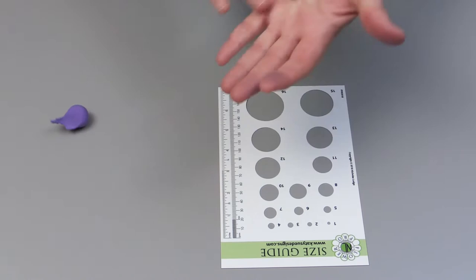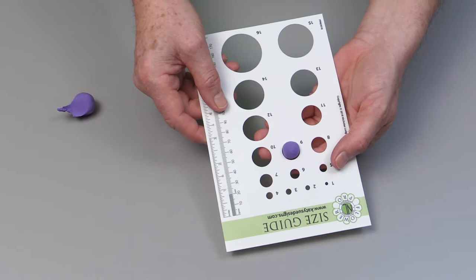When we use the size guide, we use the balls of paste and then we would just measure the ball of paste. Either the paste goes through, like a number nine small will go through the hole,